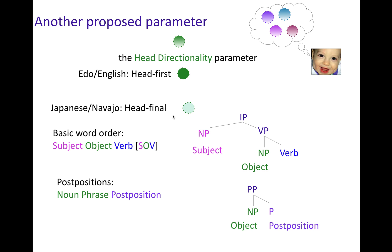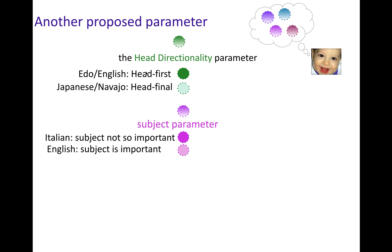The opposite would be Japanese and Navajo, which have head-final order. Inside your verb phrase that means you like to have the verb — the head — last, compared to the object. That's why you get object-verb order in Japanese and Navajo, and why those languages have postpositions, because the position marker comes after the rest of the stuff in the phrase. So these two clusters of behaviors at the verb phrase and prepositional phrase level are explained by the setting of the head directionality parameter, where English and Edo have one setting and Japanese and Navajo have the other.